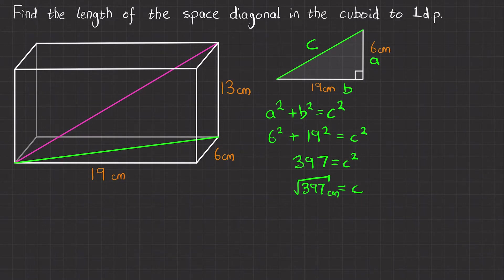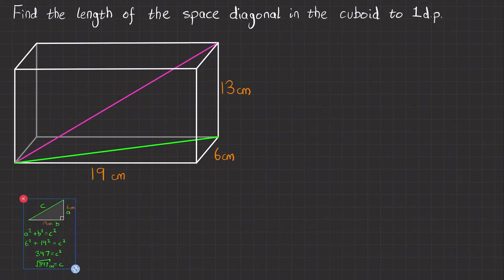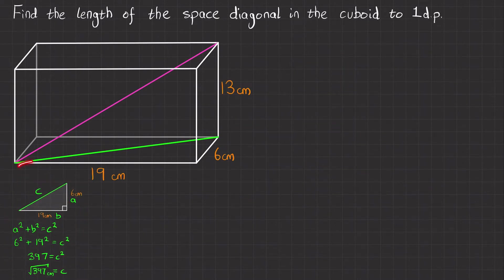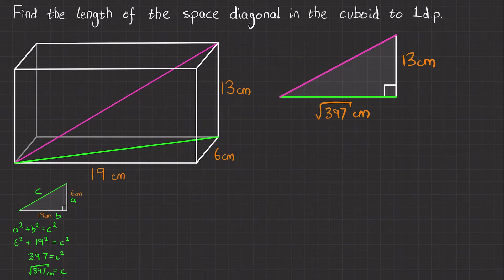As a quick check, the numerical value is 19.924 to three decimal places, and looking at that it looks about right, so we'll assume we've done something correct. So we've now found the length of the green side. We now need to find the length of the pink side, so we'll draw it out and write the side lengths we know: 13 centimetres, and this green length which we've just worked out as root 397 centimetres.